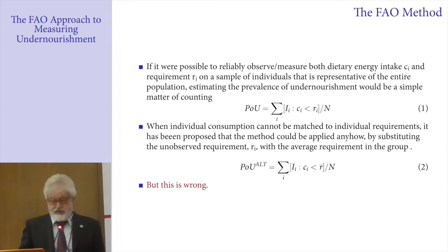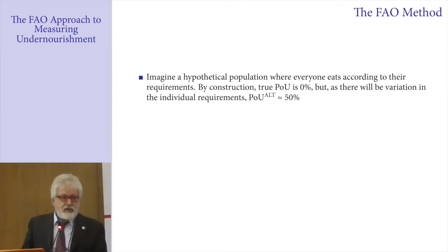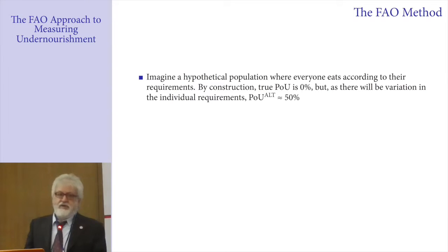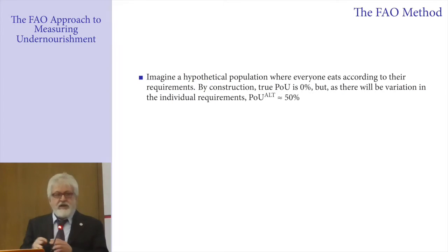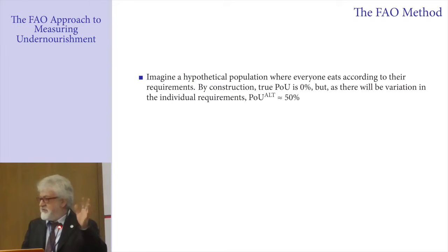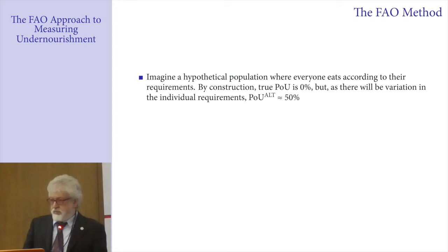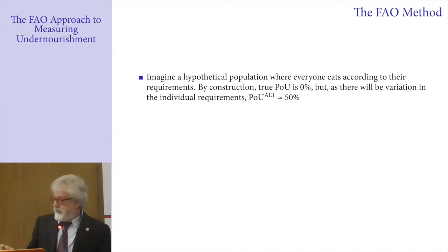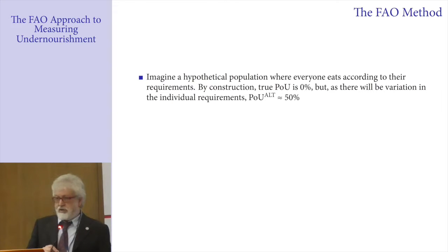I claim this is wrong. Imagine a thought experiment: you have a group of people, each eating exactly what they need. Unless this is a group of identical people, there will be variation in the level of food intake, and 50% of them will be eating less than the average requirement in the group. For this reason, the second formula is bound to give an overestimate of the probability of being undernourished in the group to which it is applied.